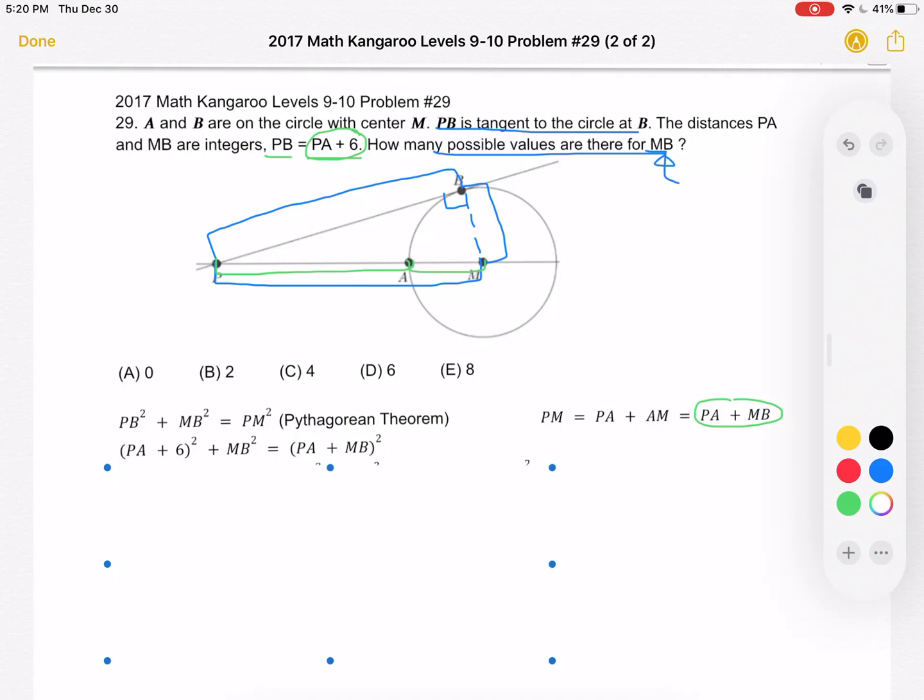So again we rewrote PB as PA plus 6 quantity squared over here plus MB squared is equal to the quantity of PA plus MB squared, which again is equal to PM squared as written here.